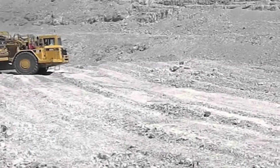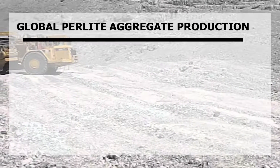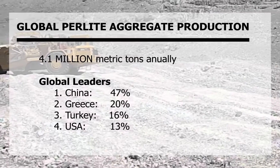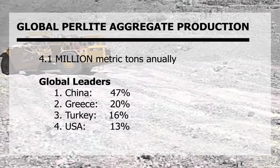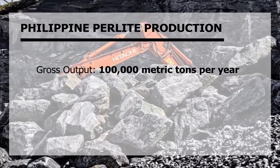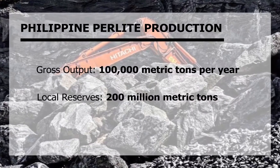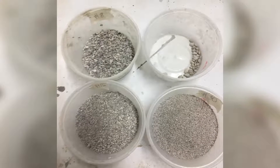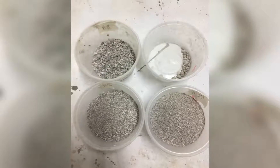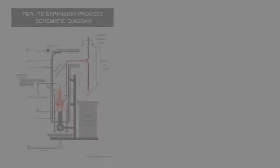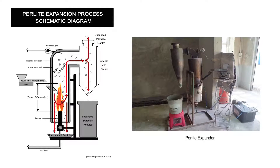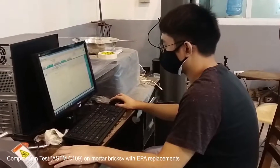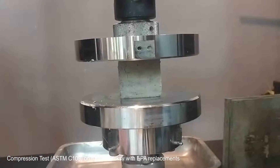Expanded perlite sits at around 400 kg/m³ compared to regular sand at about 1,500 to 1,600 kg/m³. Current estimates of annual world production of perlite are at 4.1 million metric tons, led by China, Greece, Turkey, and the United States at about 47%, 20%, 16%, and 13% respectively. Philippine production is currently at 100,000 metric tons per year with an estimated local reserve of 200 million metric tons. However, the current expanded perlite produced in the Philippines does not conform to gradation standards for lightweight aggregates. With this study, an appropriate expansion procedure will be determined to ensure conformity to lightweight aggregate standards, and the resulting expanded perlite will be tested as a fine aggregate replacement in mortar types M, N, O, and S.